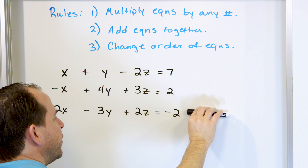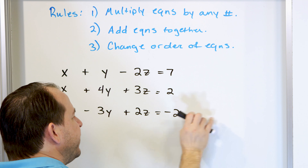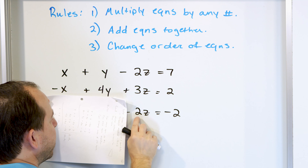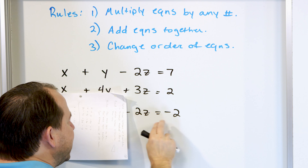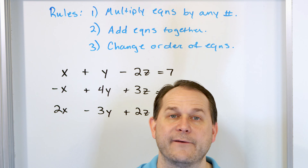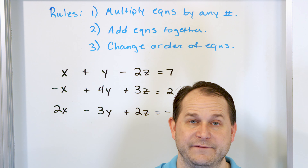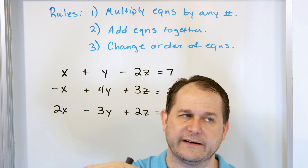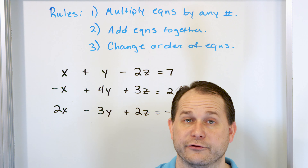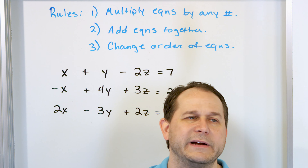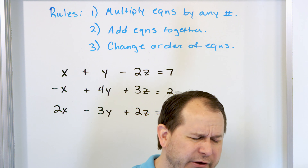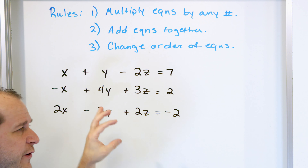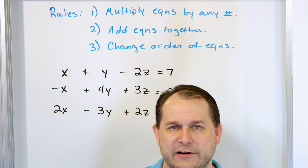In triangular form you want one variable in the third equation, because once you have that third equation with only one variable, you can divide and get z, then go back upstairs and substitute into the next equation to get the other values. But it's not in triangular form, so we're going to use these rules to make this set of equations into a triangular set.